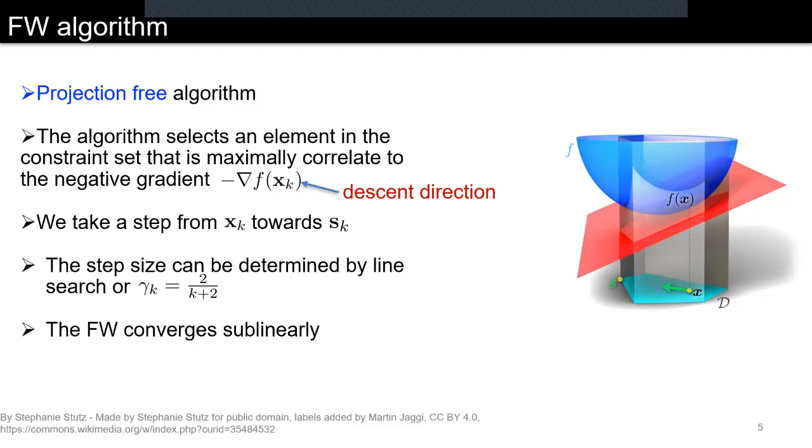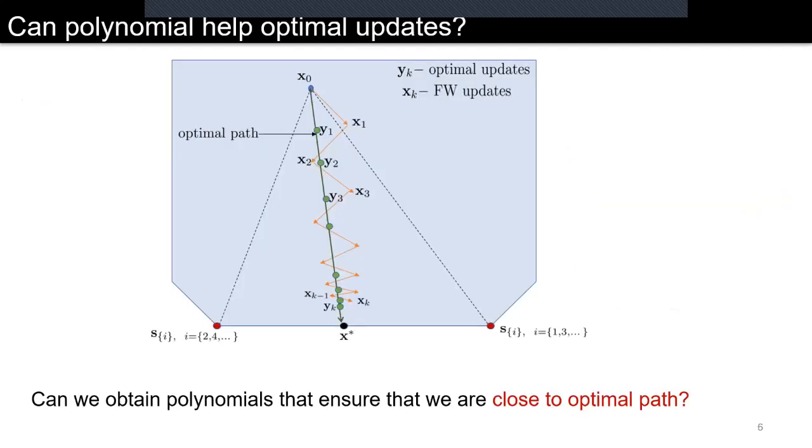One of the drawbacks or disadvantages of the Frank-Wolfe algorithm is its sublinear convergence. The sublinear convergence corresponds to the fact that the Frank-Wolfe iterates show a zigzagging behavior as it approaches the optimal point x*.